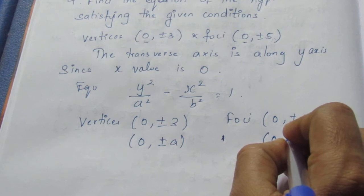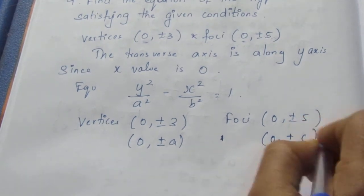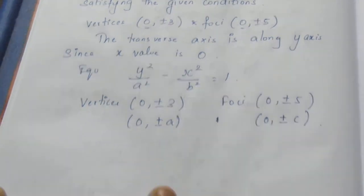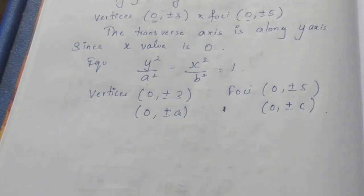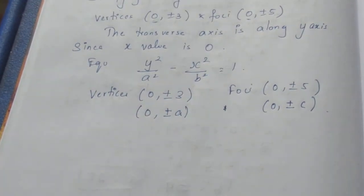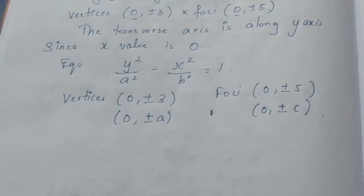Now we know that a is equal to 3. Comparing these two, we can tell that a is equal to 3 and c is equal to 5.